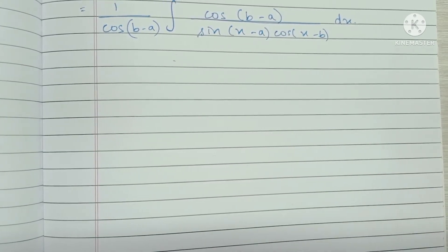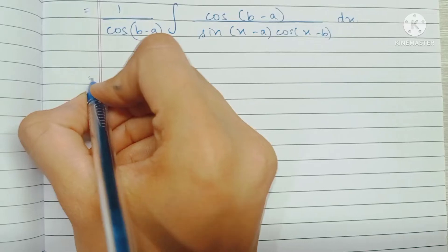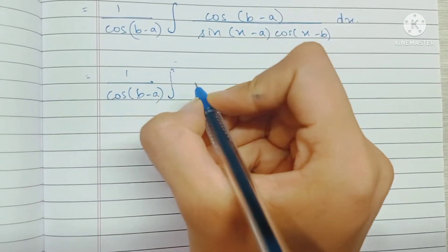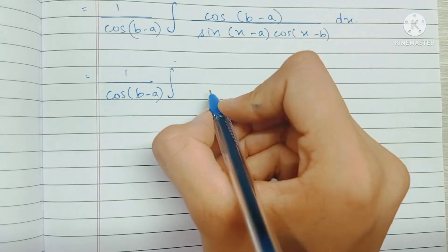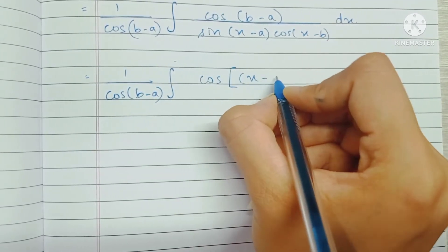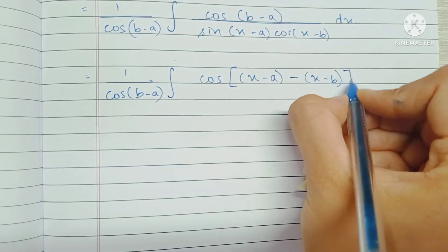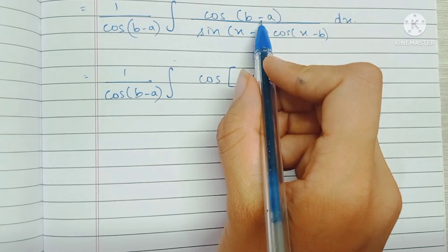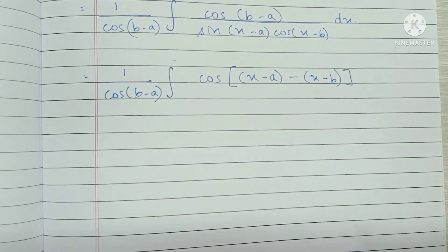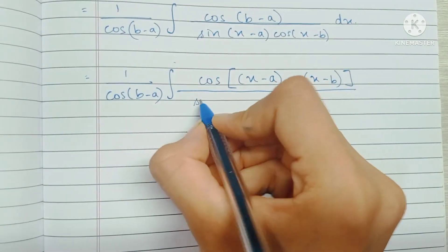Here comes the second trick we are going to use. I'm going to write the numerator in a different way — writing it as cos[(x-a)-(x-b)]. In the square brackets, we have (x-a) minus (x-b), which is ultimately b minus a, so it is still a constant. We've just rearranged it in a way to bring x into the picture, while the denominator still remains the same.